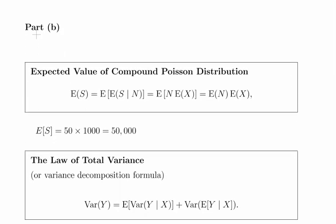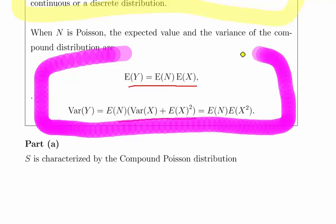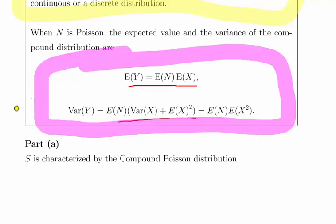The second part is asking for the expected value of the compound Poisson distribution and the variance. I just gave them before, and in many instances, you'll probably be able to just state them explicitly.